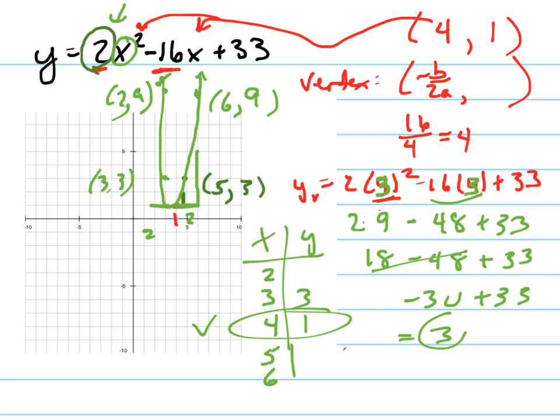Now, if I were to plug in, instead of that, if I were to plug in 5, 5 squared is 25. 5 times 16 is half of 160 is 80, plus 33. 25 times 2 is 50. I know you might not be able to see it. 50 minus 80 is negative 30, and that's also 3. So sure enough, that worked. I could do the same thing for 6 and for 2, but trust me, those are going to work as well. So that's how you graph that quadratic equation, which is a parabola, and the quick way, and the way to check it as well.